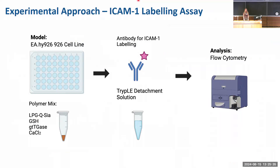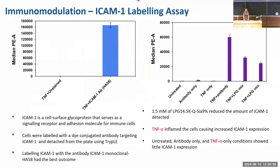In our ICAM-1 assays, we treated cultured endothelial cell lines with a mixture containing the polymer, a conjugation enzyme, and other components. We labeled the cells with an antibody, detached them using EEE detachment solution, and analyzed results using flow cytometry where median fluorescence intensity was recorded. ICAM-1 is a cell surface glycoprotein that serves as a signaling receptor and adhesion molecule for immune cells. Using the ICAM-1 monoclonal antibody HA58 successfully labeled the glycoprotein. We first treated cells with TNF to cause inflammation and increased ICAM-1 expression, and wells treated with the polymer showed decreased ICAM-1 expression, indicating immune cell protection.